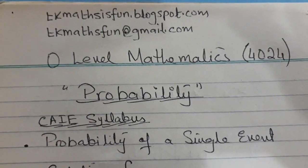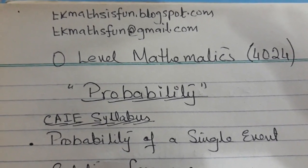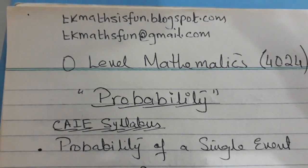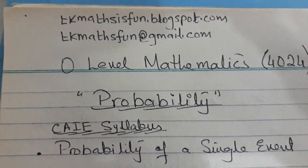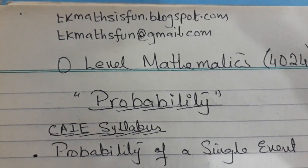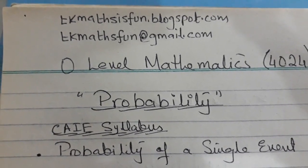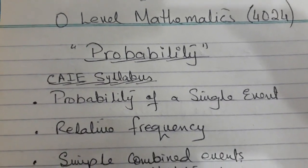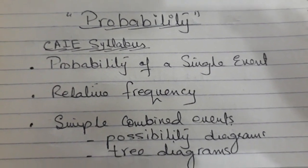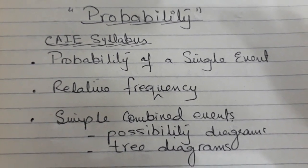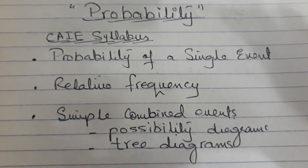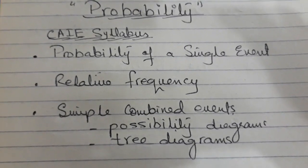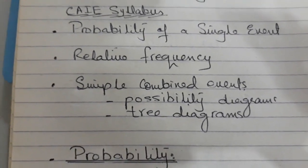Good morning, this is Tehmeena Khan, TK. Today I will explain the concept of O-level mathematics topic: probability. As you can see at the top, I have written my blog address and Gmail address. The blog address is the link to all my previous videos. Coming back to probability, according to the CAIE syllabus, there are three concepts: probability of a single event, relative frequency, and simple combined events using possibility diagrams and tree diagrams.